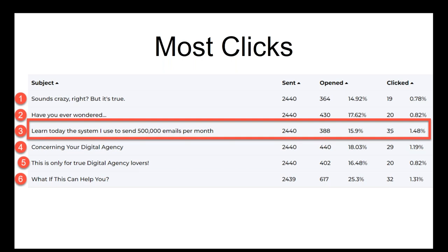If you compare line one 'sounds crazy right' — 36 clicks versus 19 — that means two times as many people who opened the email are now attending this training. And that is huge. That is also my statement: with a good subject line and good email body, you can double the result. And the only way to know which subject line works the best is doing split testing. And that is today's topic: how to split test with SendEagle.